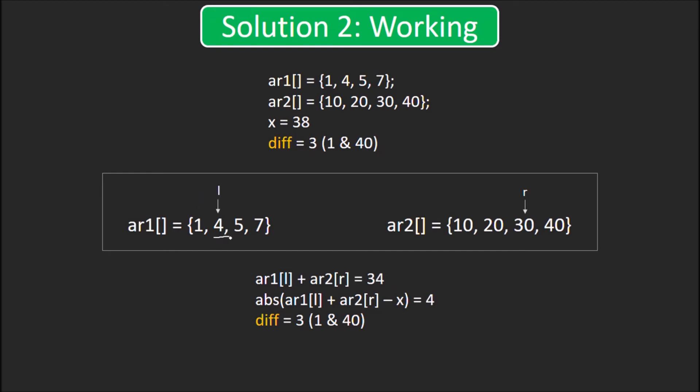Now l is at 4, sum is 34 and difference is 4. No need to update diff again. Also, sum is less than x. So, l++. L is at 5 now. Sum becomes 35 and difference is now 3. But, since diff is already 3, we need not update diff now. Also, 35 is less than x. So, again l++.